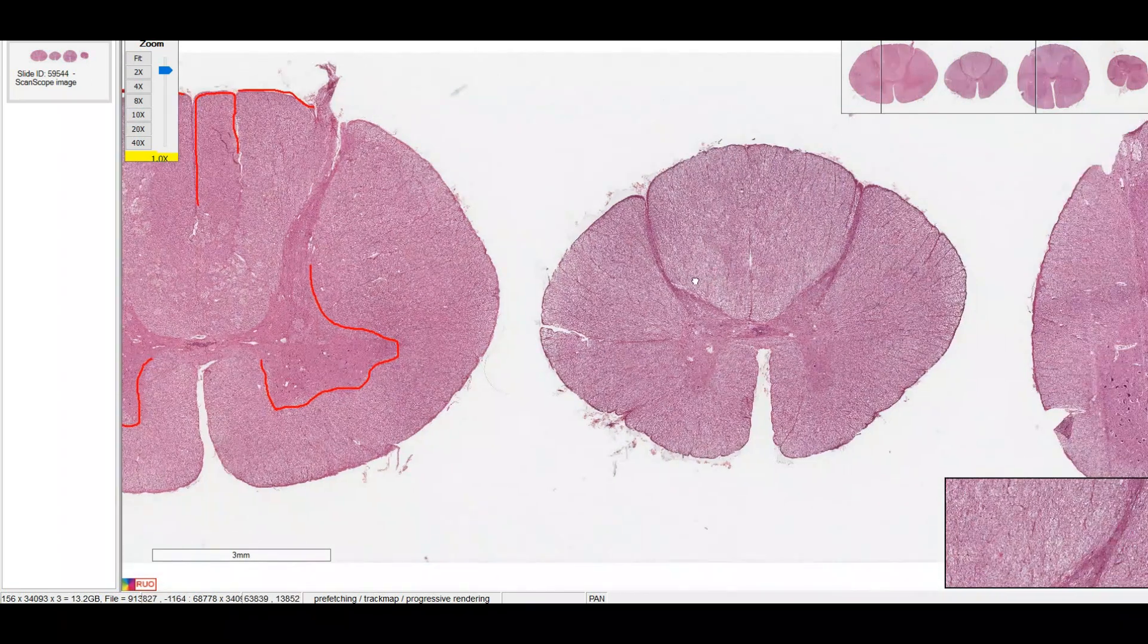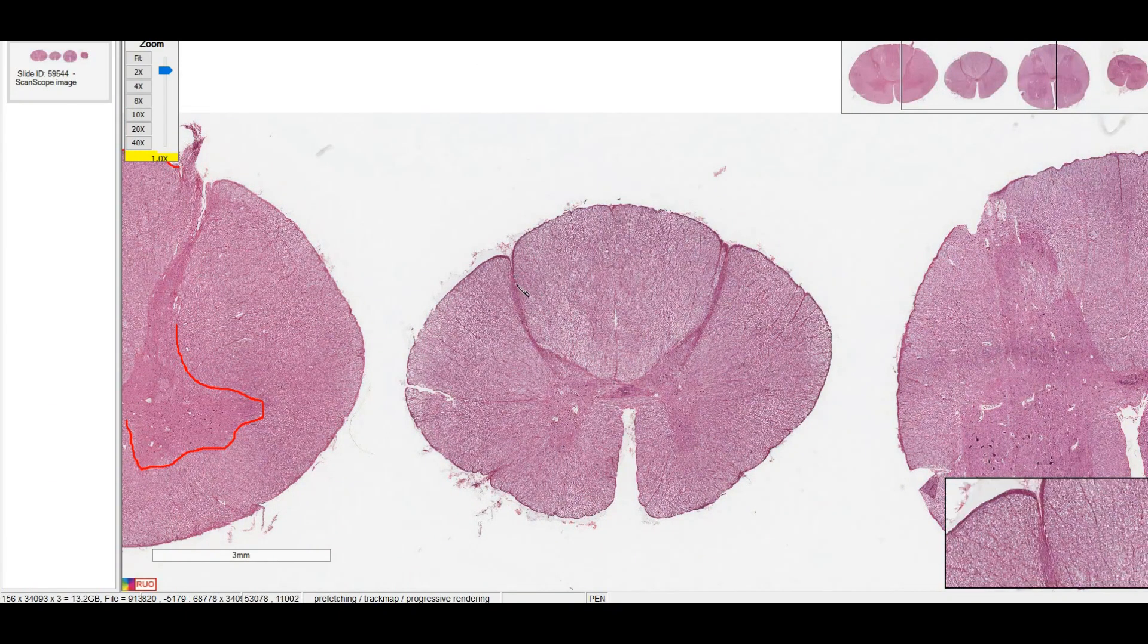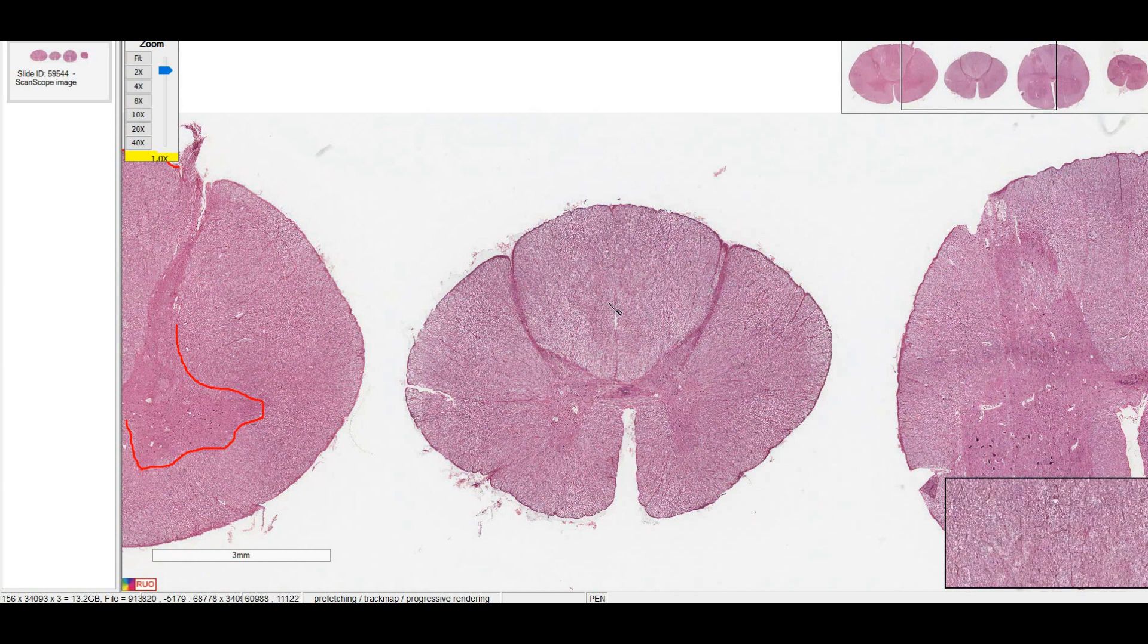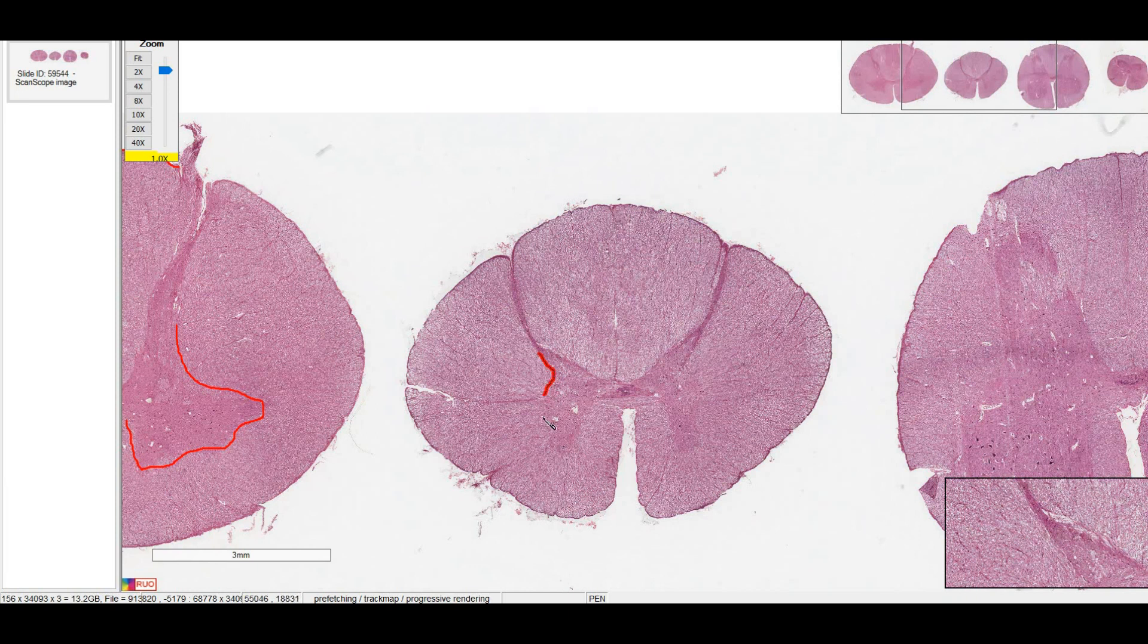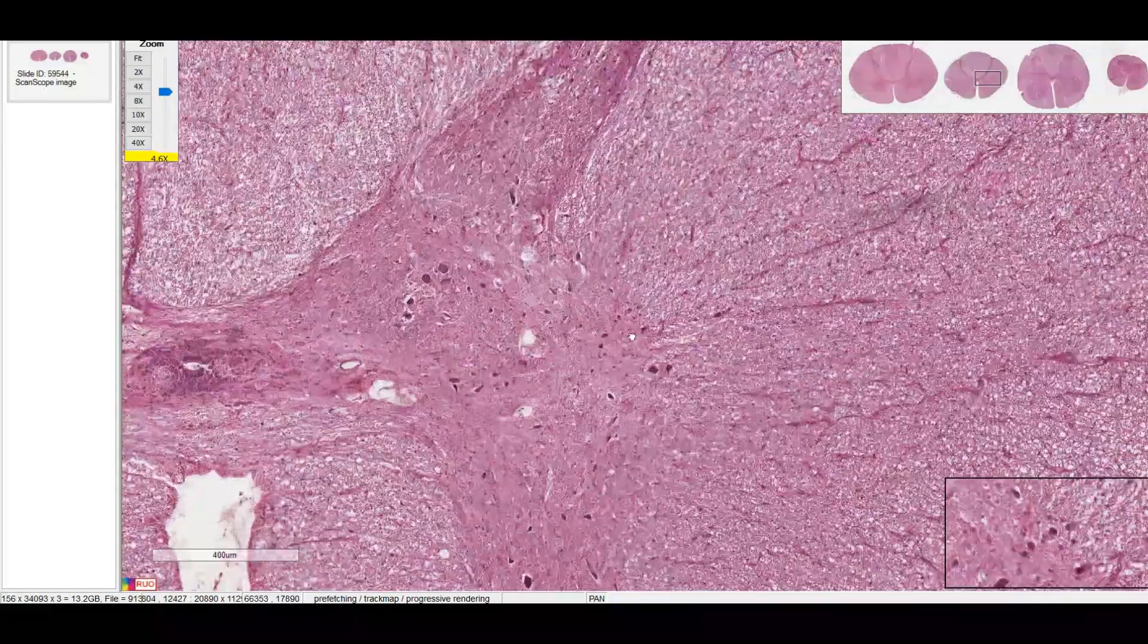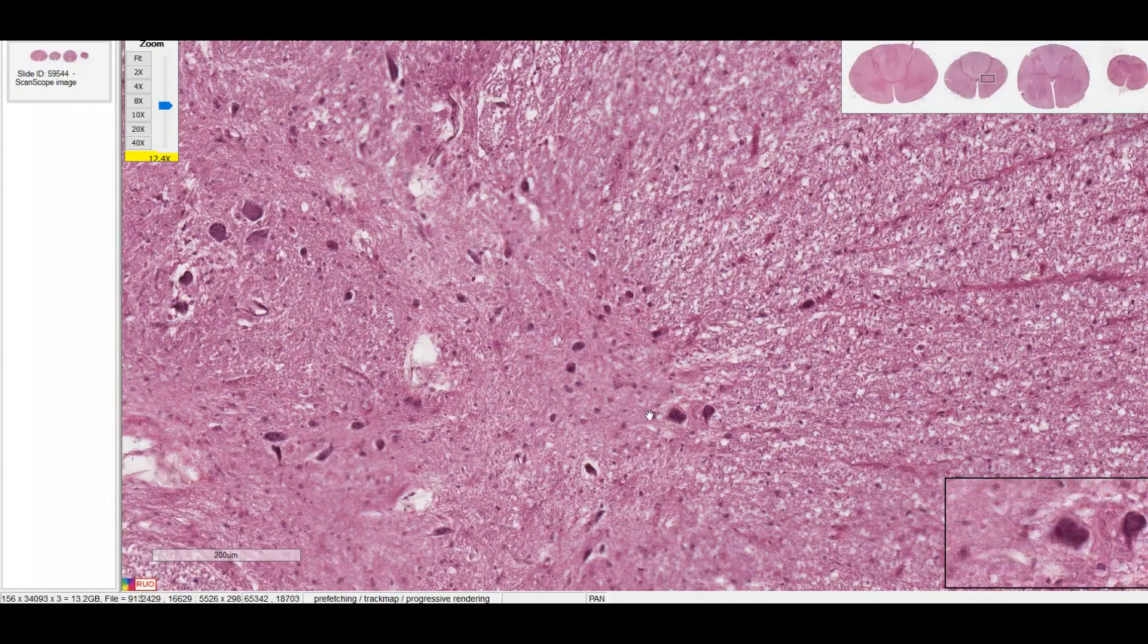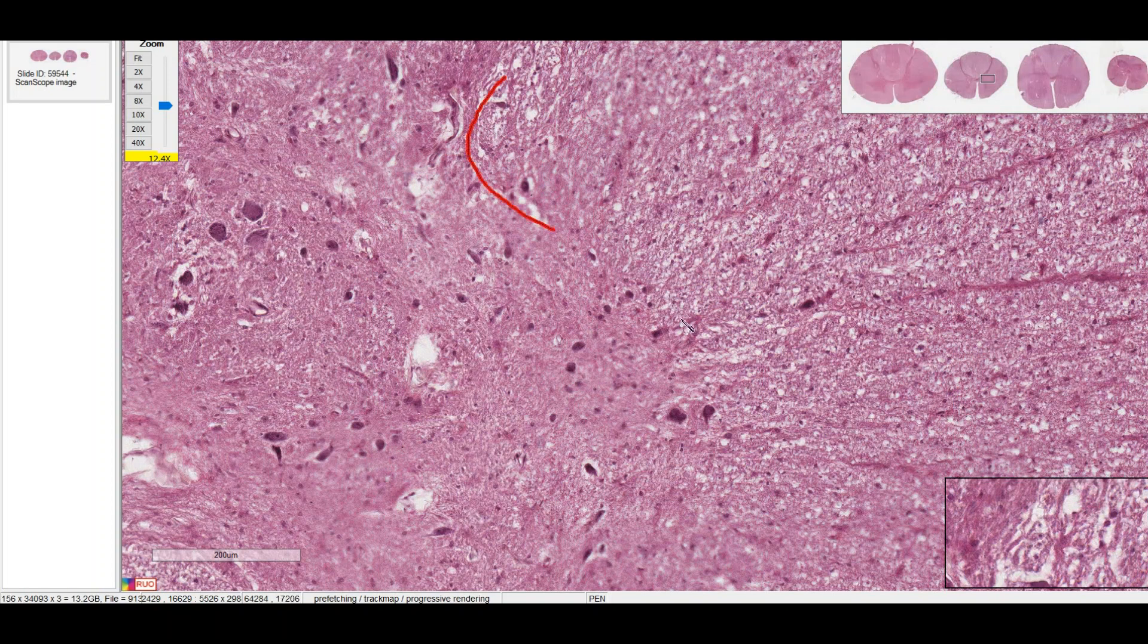Now let's take a look at the thoracic spine. Similar to the cervical spine, we have a very thin dorsal horn, and a lot of white matter relative to gray matter. If we outline the gray matter, you can actually kind of see a little bit of the intermediate horn. If we take a closer look, I can see neuronal bodies as far out as about here. So you can see that clearly there is a little bump here for the sympathetics.